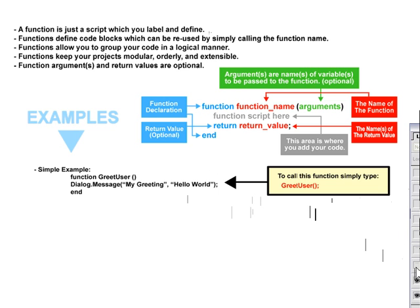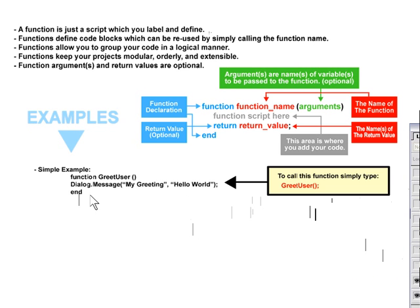Let's take a look at some examples. Here's a very simple example of a function. The function is over here — as you can see we've defined the function by typing function and end, and we've named it greetUser. So obviously it's something to greet a user, and in the brackets we've left out the optional arguments.